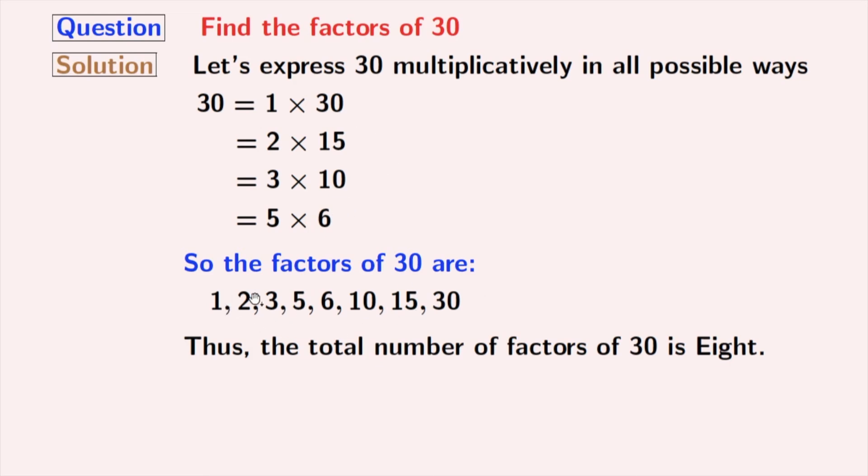Now look at these factors. Among these factors, 2, 3, and 5 are the prime numbers because these numbers do not have any other divisor than 1 and that number itself. So we can say that the prime factors of 30 are 2, 3, and 5.